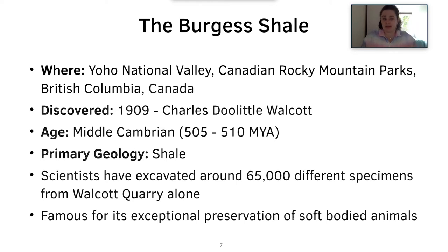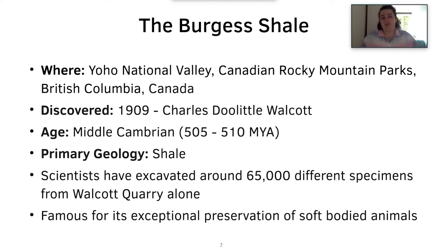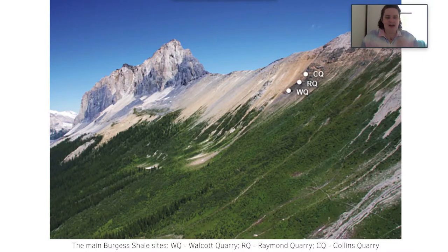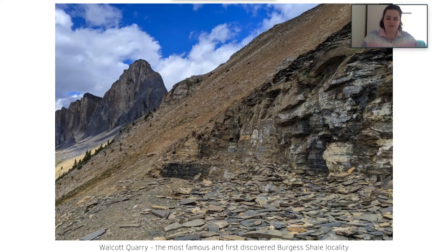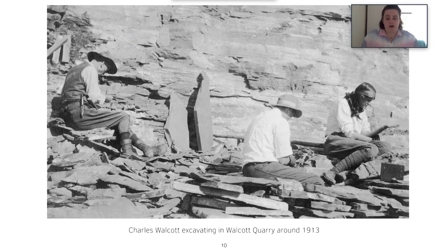There are three different quarries within that one area and the Walcott Quarry was the first one excavated. The Burgess Shale is a Lagerstätte, most famous for its exceptional preservation of soft-bodied animals, which you will be seeing later in this lecture. The main Burgess Shale sites in this area are the Walcott Quarry, the Raymond Quarry, and the Collins Quarry. The Walcott Quarry was the first discovered and most famous Burgess Shale locality. Here's an image of Charles Walcott excavating in Walcott Quarry around 1913.